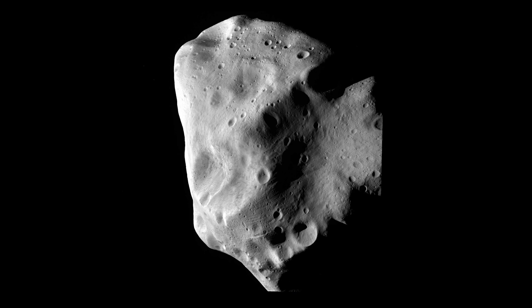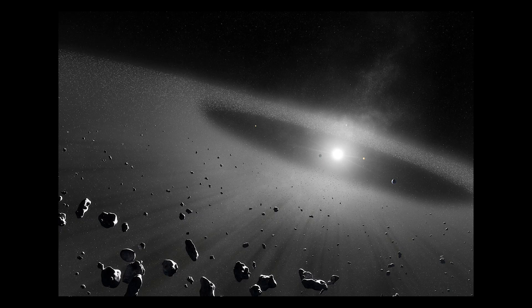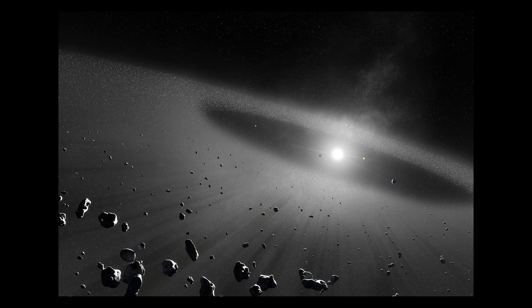Asteroids are space rocks left over from the formation of a solar system. They're orbiting around our Sun, most of them between the orbits of Mars and Jupiter.